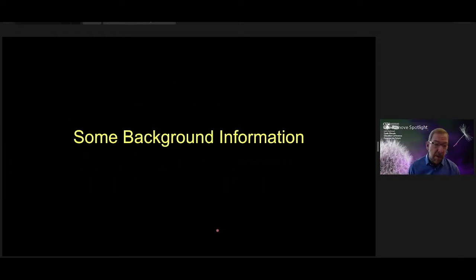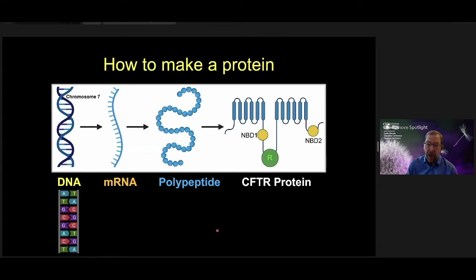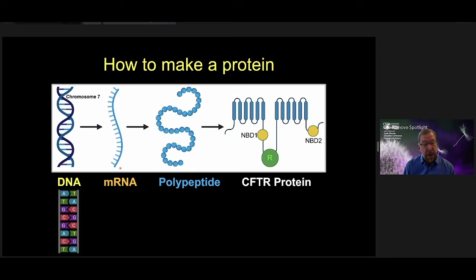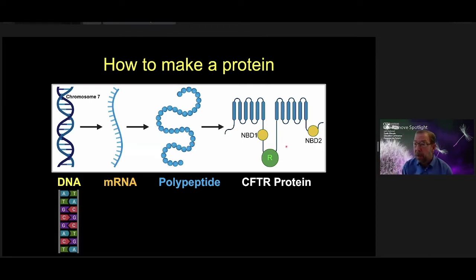A little more background: how do we make a protein? CFTR is on chromosome 7, where the base pairs of the two strands of DNA are complemented — AT base pairs, GC base pairs. Transcription makes messenger RNA for CFTR, which is translated into a polypeptide and eventually into the complex CFTR protein, which makes its way to the cell surface.